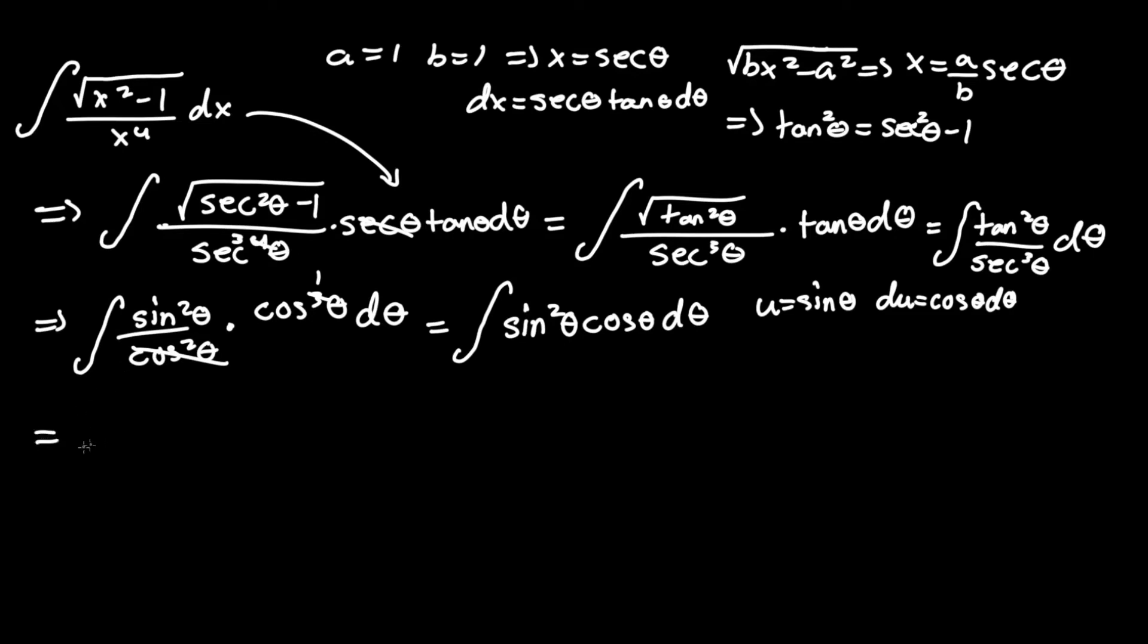And d theta would equal du over cosine theta. So let's sub that in now. This will equal the integral of u squared, since u equals sine theta, times cosine theta.